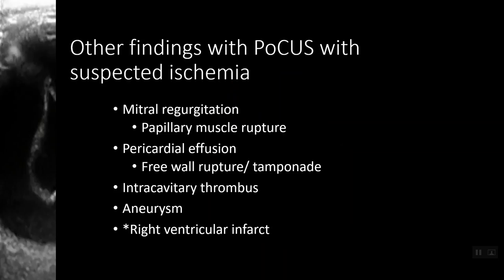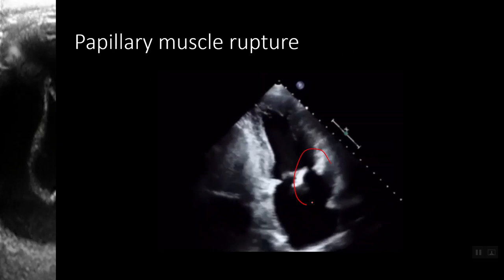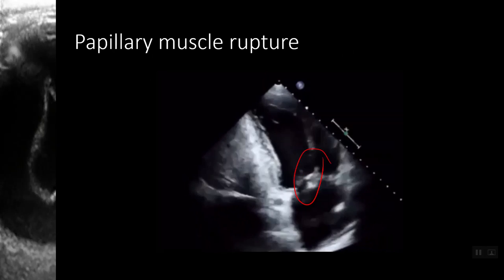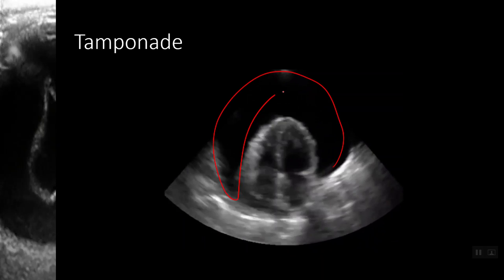Seeing as we've talked so much about ischemia today, I thought it would be prudent to touch briefly on some additional findings to watch out for in this population. You may see a papillary muscle rupture or pericardial effusion. Less commonly, you may see an intracavitary thrombus or wall aneurysm. Also keep your eye out for inferior wall hypokinesis or akinesis that may indicate an RV infarct, as those infarcts can be easily missed on the ECG. Here is a visual example of a papillary muscle rupture seen on an apical two chamber view, and here is a pericardial effusion with tamponade seen on an apical four chamber view.